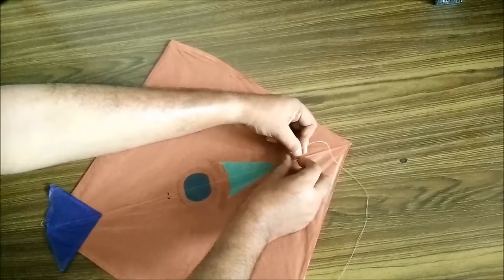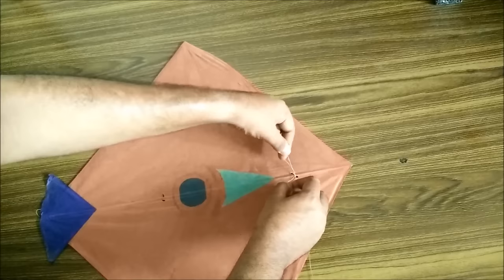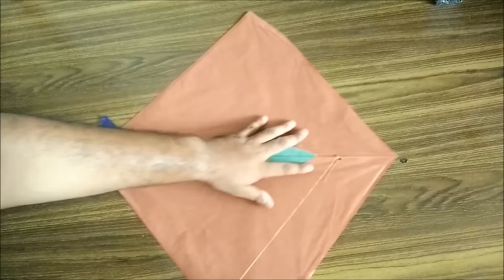On this end we'll just tie a knot here. It's a simple knot that you need to tie. But the knot has to be a double knot to make sure that it doesn't open when you are flying the kite.